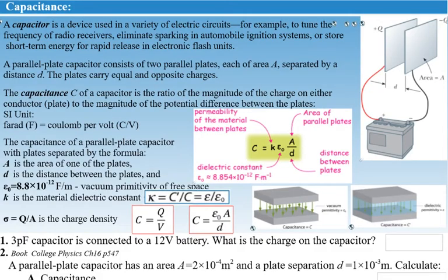A capacitor is a device used in a variety of electric circuits — for example, to tune the frequency of a radio, to eliminate sparking when turning a device on or off, or to maintain current flow for a short time when a device loses power by discharging. Capacitors consist of two plates with a dielectric non-conducting material between them — sometimes a vacuum, and sometimes a different dielectric that can increase the capacitance.